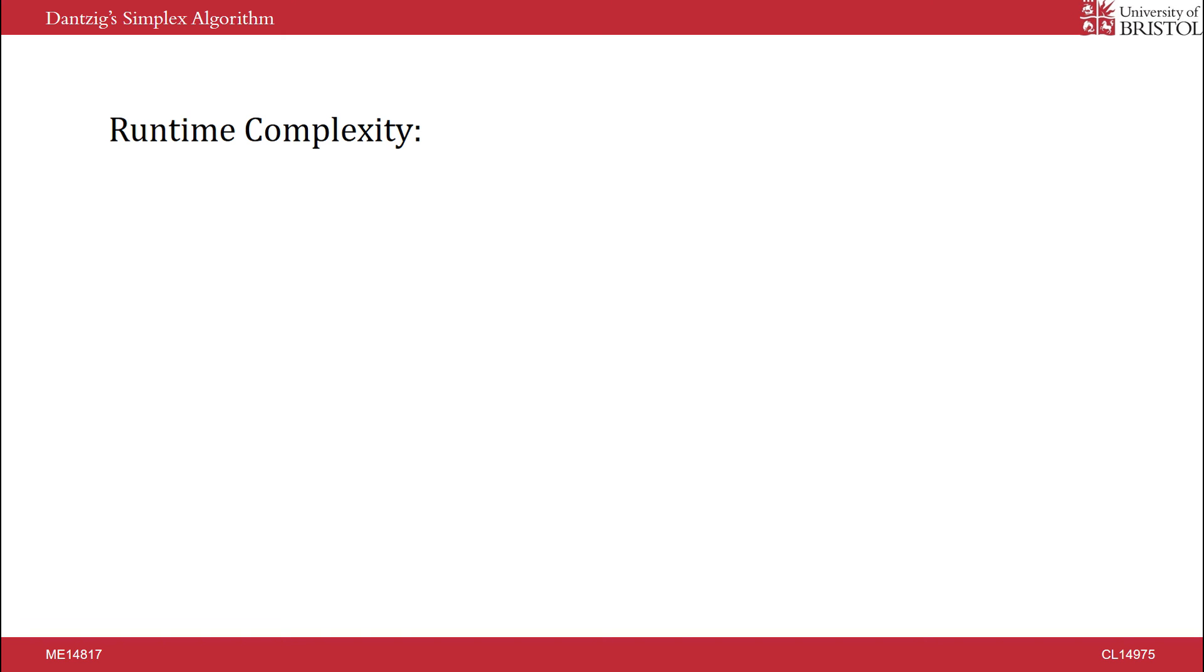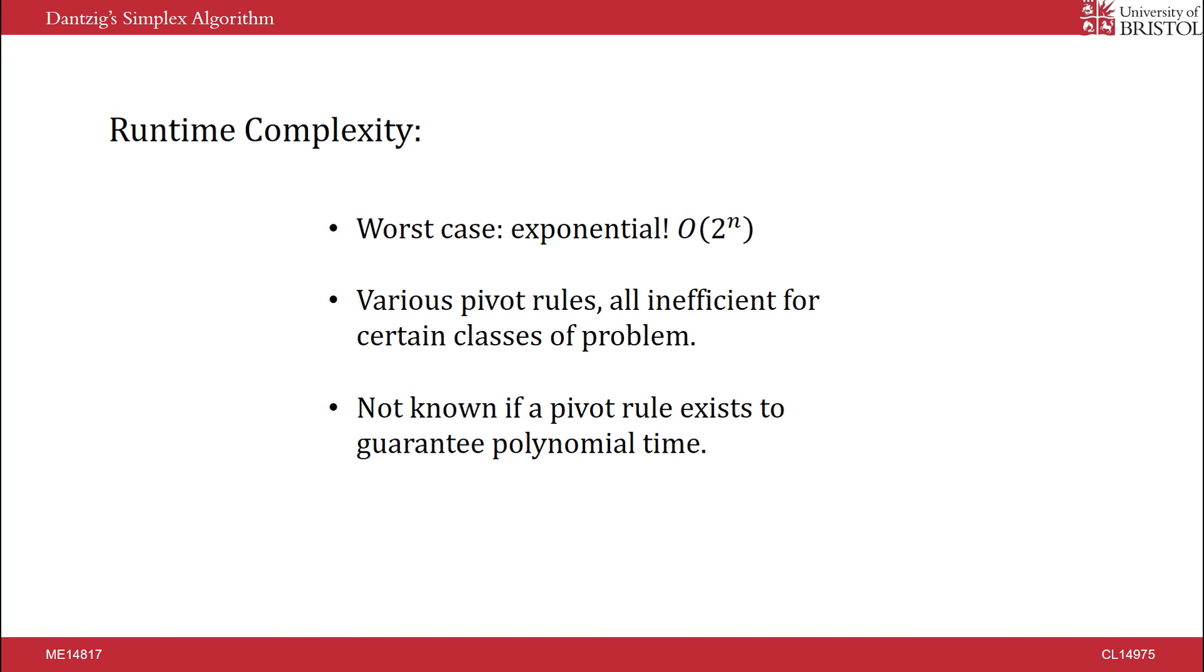The worst case time complexity of the simplex algorithm is O of 2 to the n, where n is the number of constraints. The number of iterations required typically depends on the order of the pivot values used. Despite people coming up with methods of choosing the best pivots, it has been shown that these are inefficient for certain classes of the problem. It is currently unknown as to whether there exists a pivot rule for guaranteeing polynomial time all of the time.